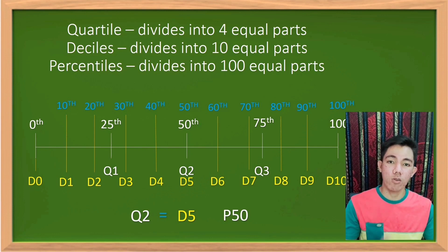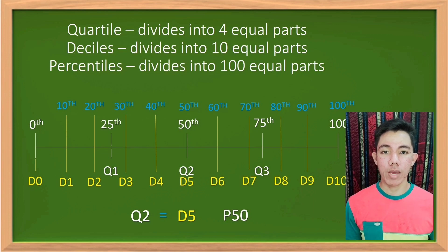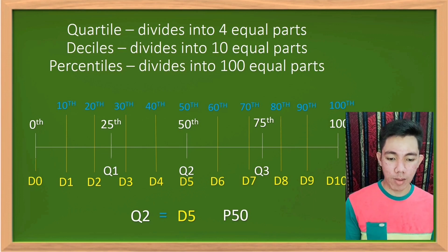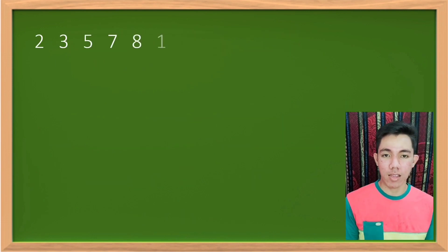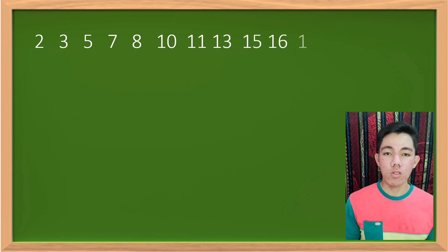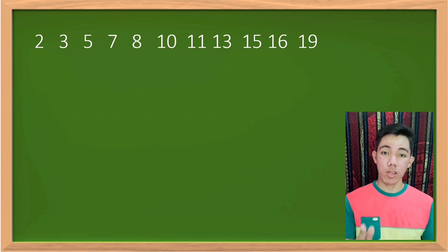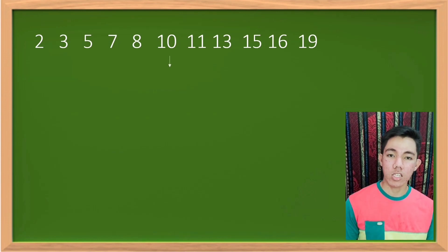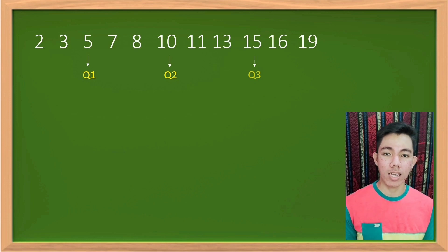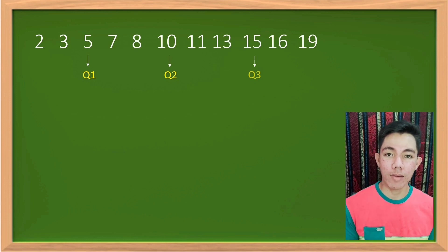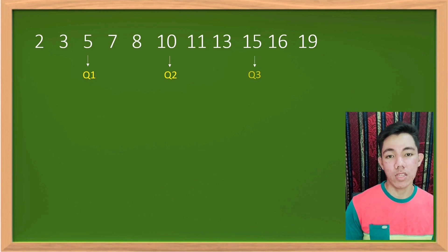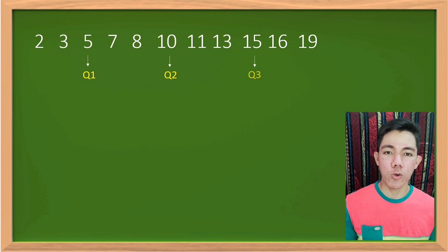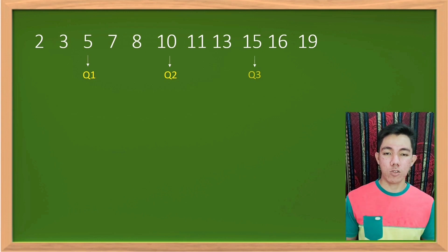Now, how do we find the quartile and decile? Given the data set: 2, 3, 5, 7, 8, 10, 11, 13, 15, 16, 19 — first count how many values there are: that is 11. Find the middle value: that is 10, so Q2 = 10. The middle of the lower half (2 to 10) is 5, so Q1 = 5. The middle of the upper half (10 to 19) is 15, so Q3 = 15.